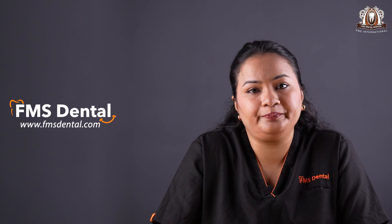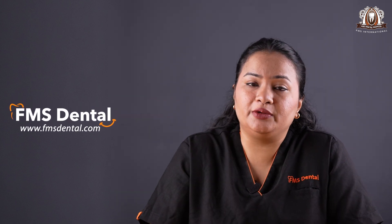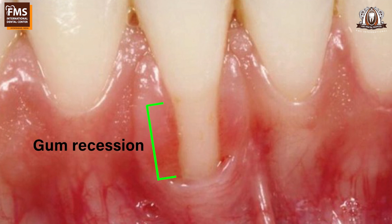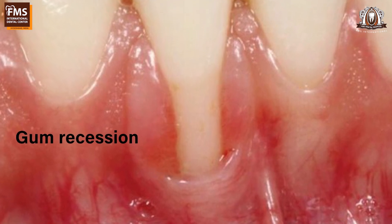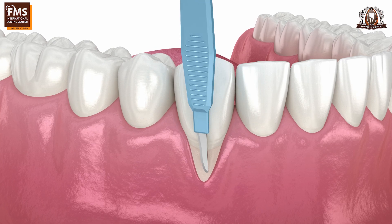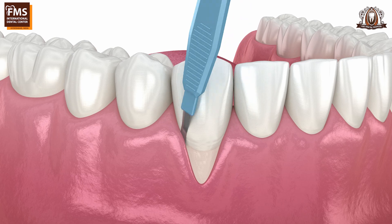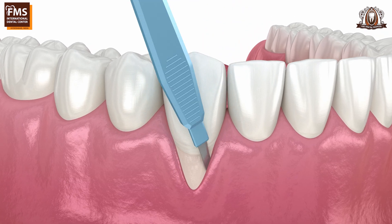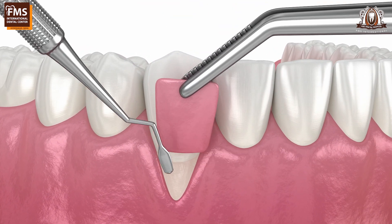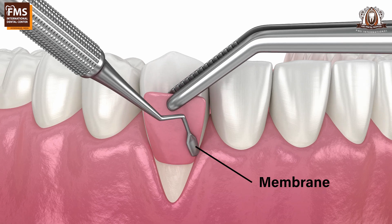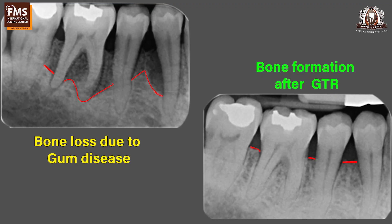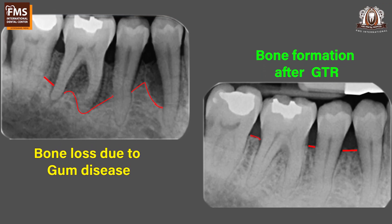GTR protocol can also be used in surgeries that correct gum recession. In such cases, the membranes can help by increasing the thickness of gums. They are also important to provide stability to keep gums in their new position.